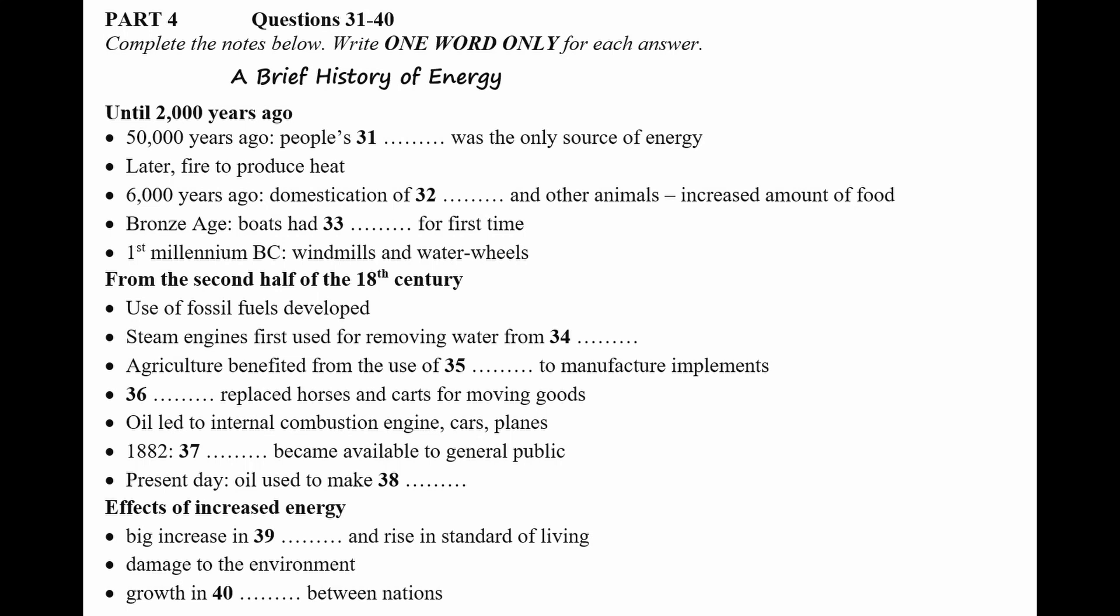Then we discovered fire, and found that we could burn wood, animal dung, and charcoal to generate heat. Around 6,000 years ago, people started to domesticate some animals, such as oxen, to plough the fields and increase crop yields. During the Bronze Age, perhaps 3,000 years ago, the wind and water were harnessed as sources of power. The first sails were made, enabling boats to travel on rivers and seas, and of course this increased mobility and trade. In the first millennium BC, primitive windmills and water wheels were invented, which allowed people to grind grain and pump water. These were powerful and reliable, and remained the main ways of using energy for thousands of years.